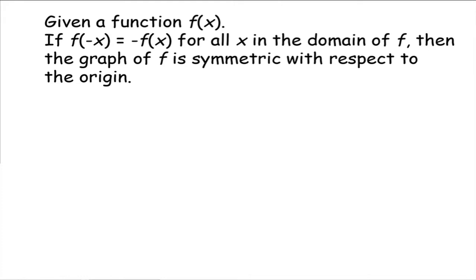The next one is symmetry with respect to the origin. If f of negative x equals negative f of x for all x in the domain of your function f, then the graph is symmetric with respect to the origin. That means if you take opposite x values and plug them into function f, they give you back opposite y values — and that happens for all x in your domain.